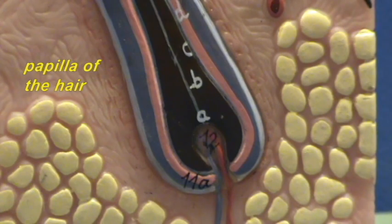Again, we're using this word papilla. It is going to be the nourishing part of the structure that provides the growing part with oxygen and nutrients and removes waste.